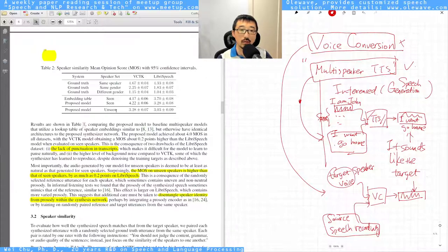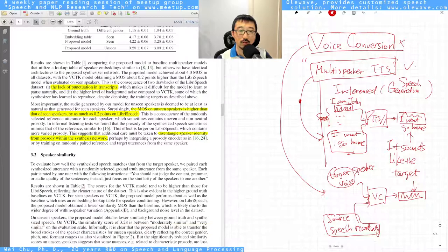But the good thing is for the unseen case, all the two datasets can get a similarity number above 3, which is good.